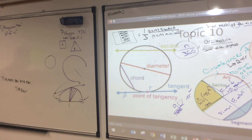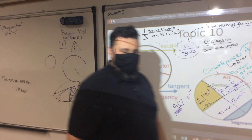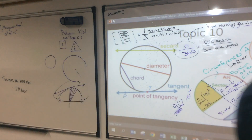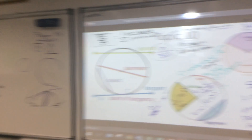So a circle and a semicircle both meet the requirements of a polygon — there's just an infinite number of sides.